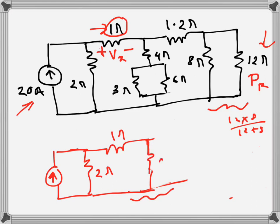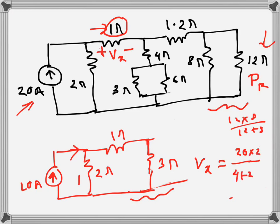The 20A from the current source is split between two parallel branches: the 2Ω branch and the 4Ω branch. Applying the current divider rule, the current through the 4Ω branch is 20 divided by (4 plus 2), times 2 — then multiplied by 1Ω gives us Vx equal to 6.67 volts.